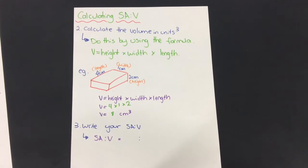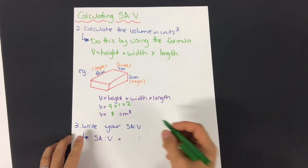Now my third and final step is to write your surface area to volume ratio just like this. So your surface area, remember, was 28 centimeters squared.